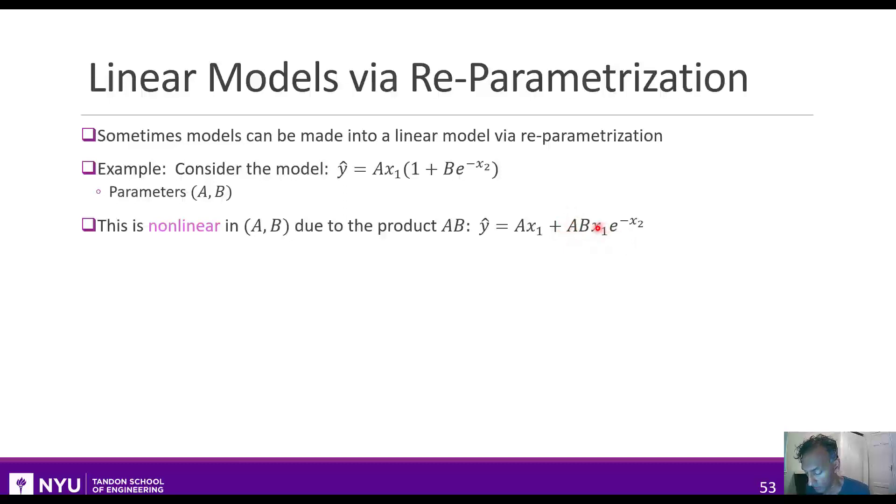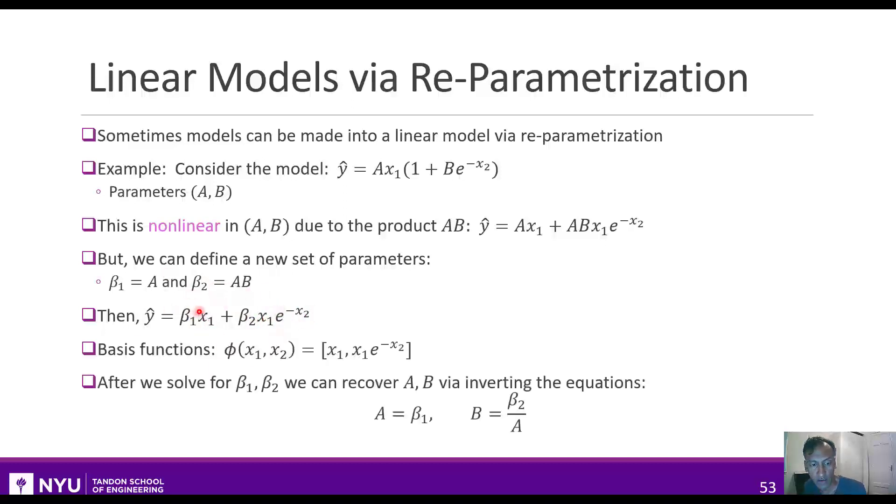Now a quick way to get around this is to define new parameters such that it will be linear. So in particular, you pick beta1 to be a, and you pick beta2 to be this product. And now y hat is just beta1 times x1 plus beta2 times x1 e to the minus x2. So it's linear in these two functions. Once it's linear, we can define our basis functions for the two terms, and then we can solve for beta1 and beta2 from data.